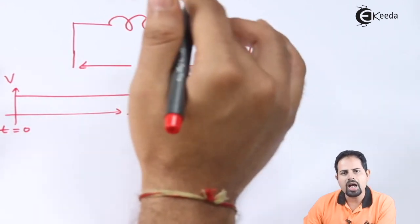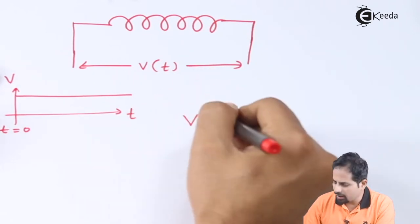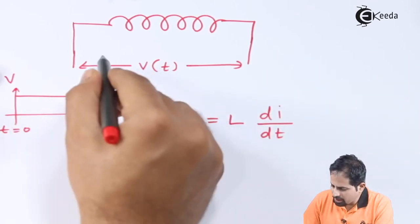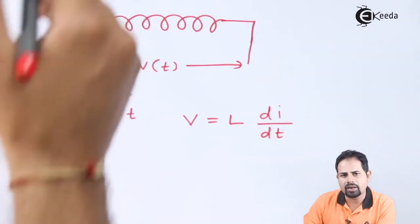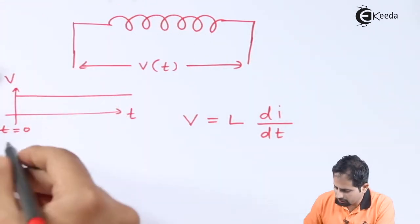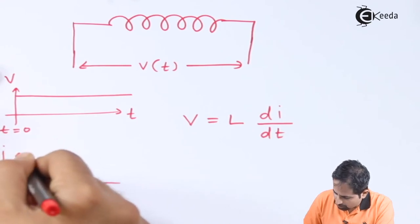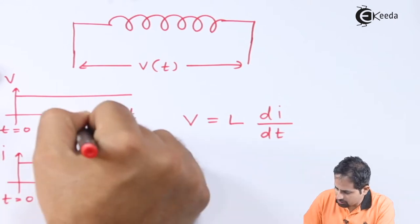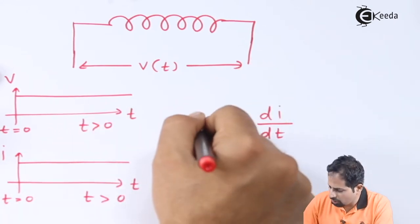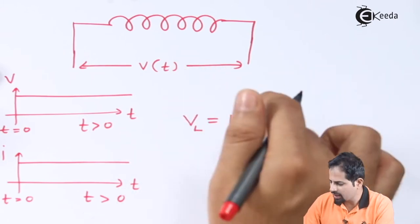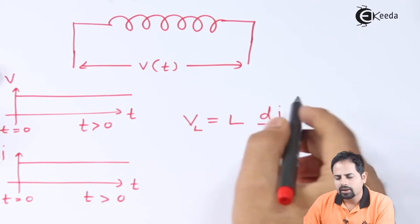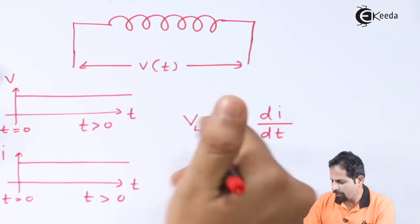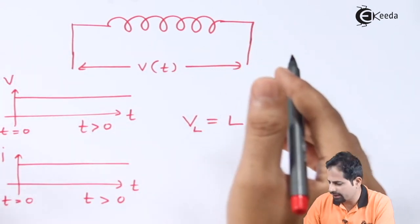We all know that voltage across an inductor is VL equal to L di by dt. As voltage is DC, similarly the current which will result will also be a DC current. So voltage across the inductor, VL, is equal to L di by dt. This means that for any change in current there exists a voltage or EMF across the inductor. This formula comes from Faraday's law.